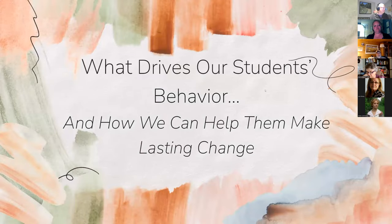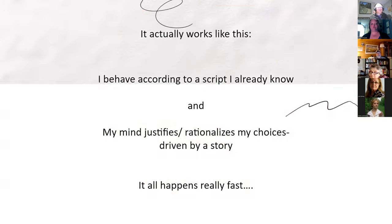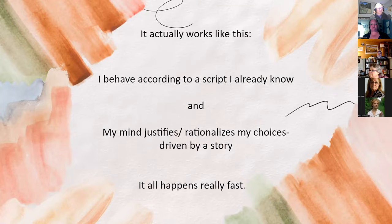We assume something is happening or needs to happen, I think about what I should do, I decide on an action, I take action. But the reality is: I behave according to a script I already know, my mind justifies and rationalizes my choices, driven by a story I believe about myself or my world — and it all happens really fast. Our students are navigating fast-moving complex social situations using the current tools they have. If we understand how those tools work, we can help students use them better and maybe add new tools to their toolbox.